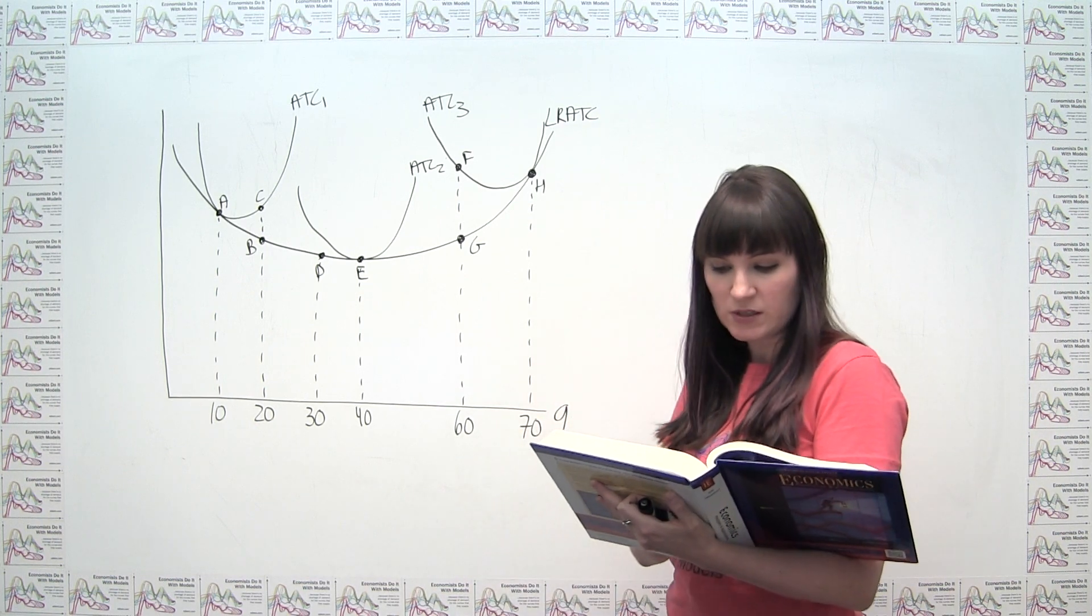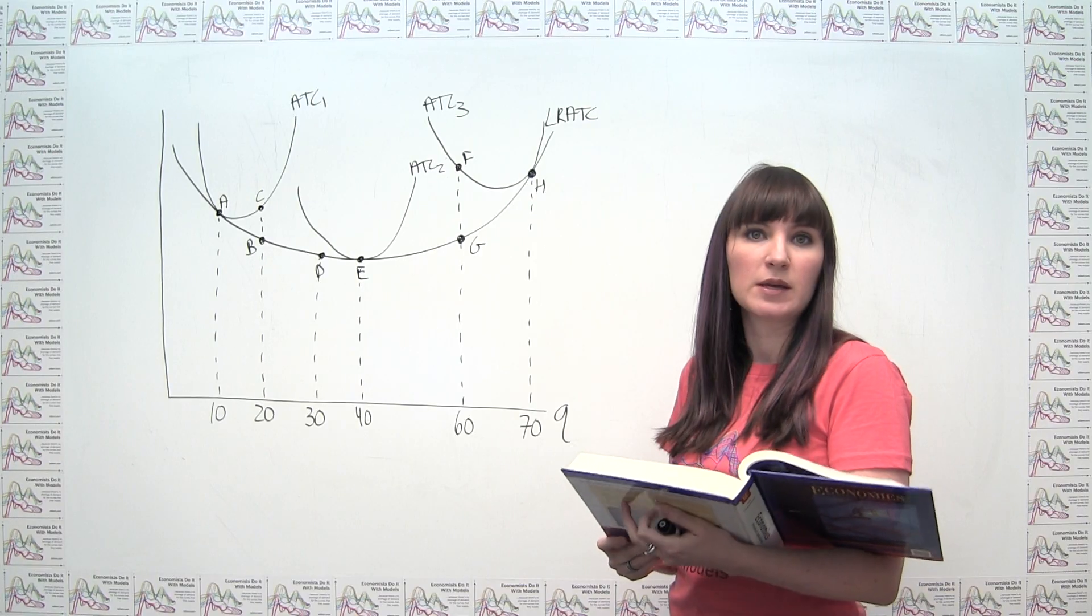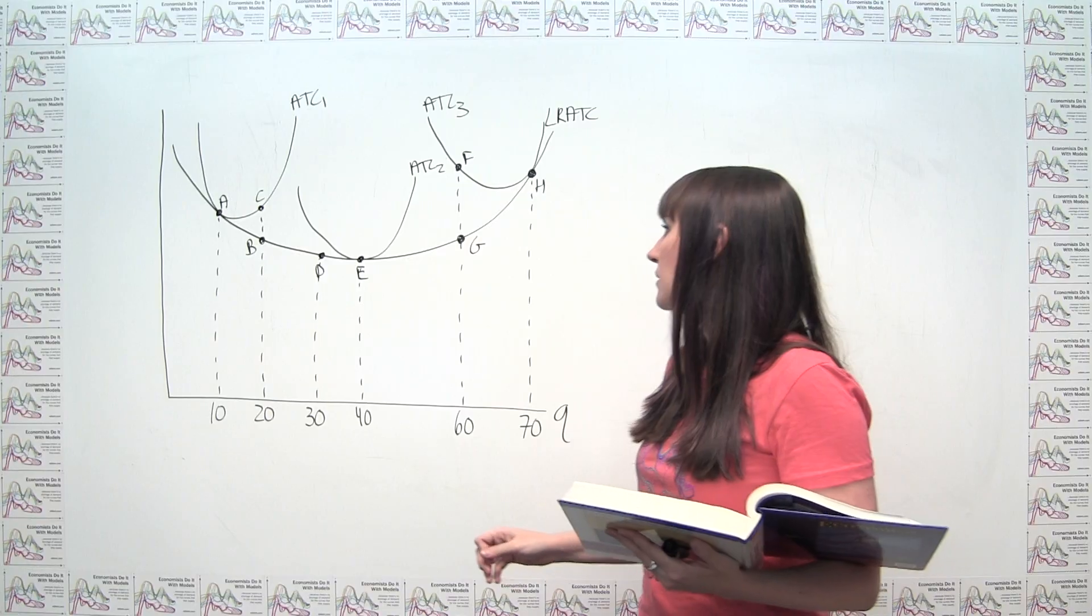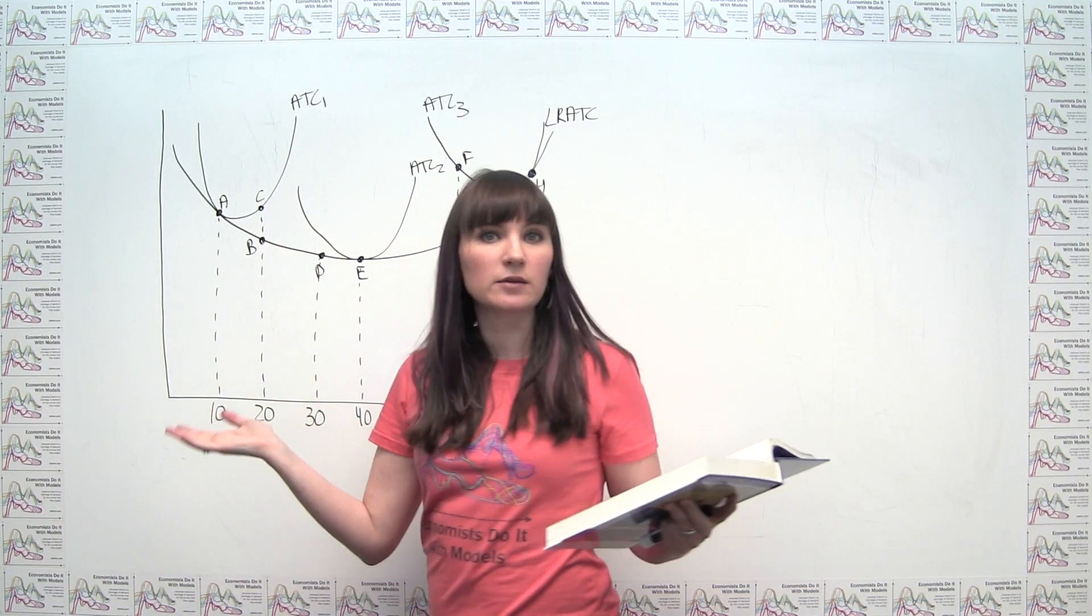It says, Ludmilla's business partner Hans, an impatient sort, wants her to double production immediately. So that would mean that we're interested in going from producing a quantity of 10 to producing a quantity of 20, of course.